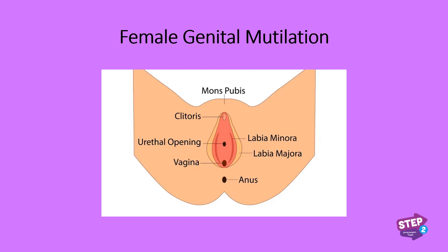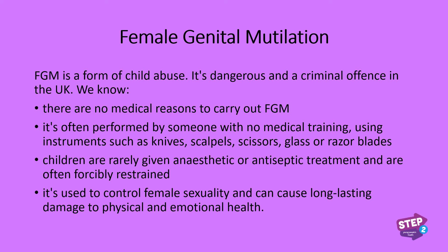For a lot of women, it is not noticed that they've experienced FGM until they are giving birth, and unfortunately by then it can be too late to help them. FGM is a form of child abuse — it's really dangerous and it is a criminal offence. It's often performed by somebody with no medical training, using instruments such as knives, scalpels, scissors, glass or razor blades. Children are rarely given any anaesthetic or antiseptic treatment and are often forcibly restrained. Using these methods without antiseptics could cause serious infections.